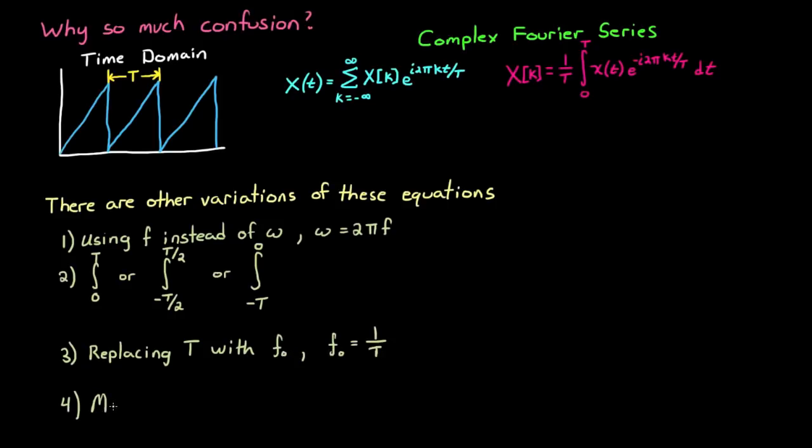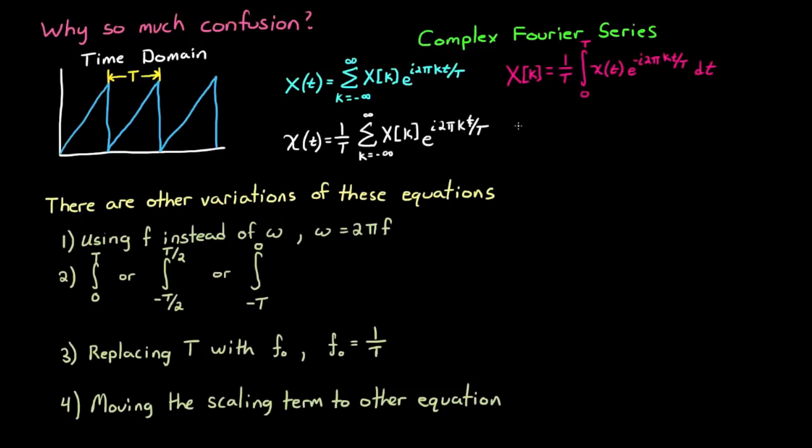Or you can replace the period t with the fundamental frequency f0, where f0 equals 1 divided by the period. And lastly, moving all or part of the scaling factor, 1 over t, to the other equation. And it's this last variation that really confuses the issue of Fourier series and Fourier transforms.